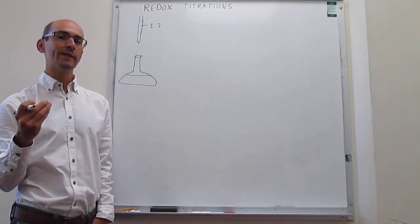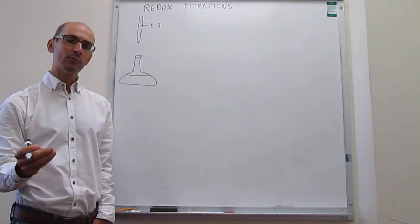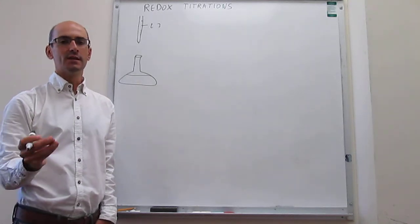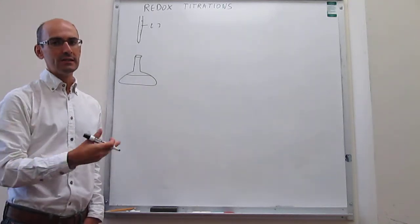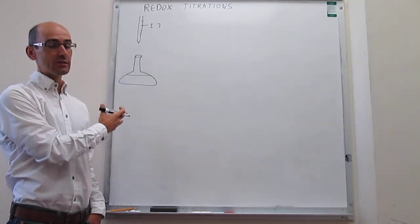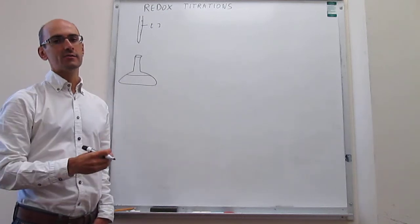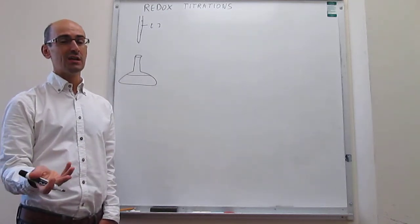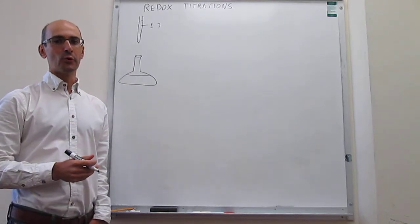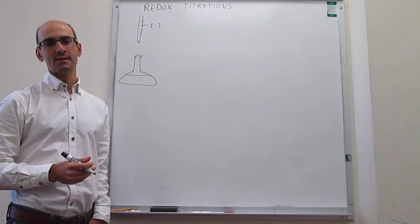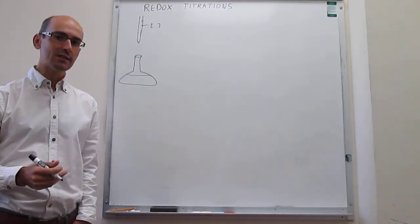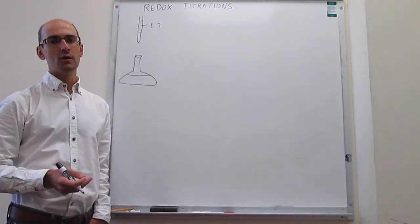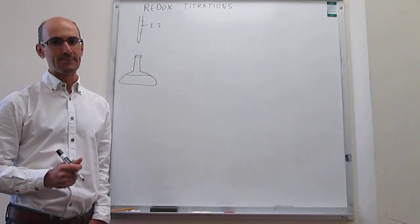Notice that the way to identify the stoichiometric point in acid-base reactions was using a color change in an indicator. In this case, generally, you don't need an indicator at all. It turns out that once the oxidation numbers change, it's quite likely that the color of the solution is also going to change, and then you can identify quite cleanly what the stoichiometric point is.